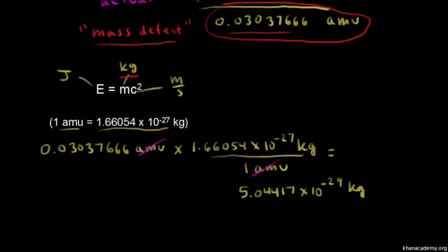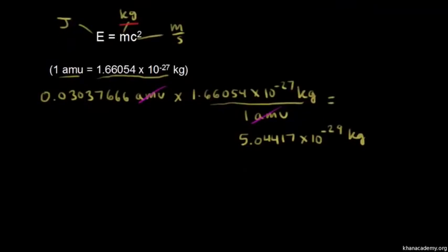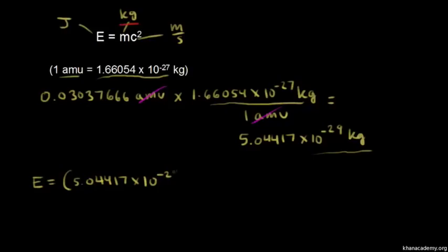Now we have the mass in kilograms. Let's go ahead and calculate the energy. This is the mass that was lost when the nucleus was formed, so let's figure out how much energy was given off. Energy equals that mass — 5.04417 times 10 to the negative 29 — times the speed of light, which is 2.99792 times 10 to the 8th meters per second, squared.